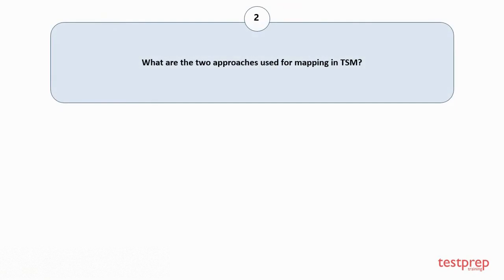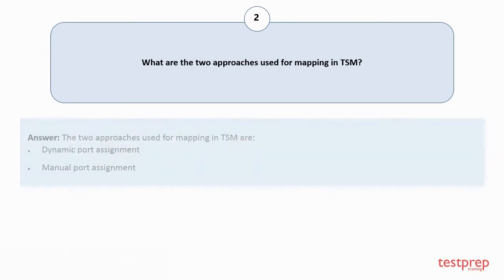Question number 2: What are the two approaches used for mapping in TSM? The two approaches used for mapping in TSM are: 1. Dynamic Port Assignment, 2. Manual Port Assignment.